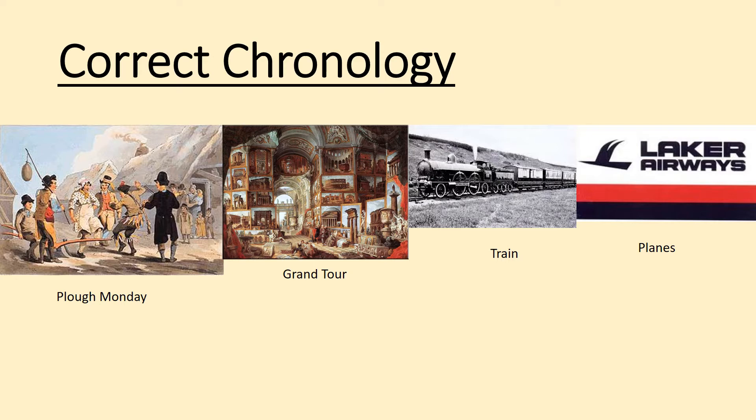Then we move on to the Grand Tour in the early modern era, which was for rich men to finish their education. And then in the modern era we go to trains and planes, which is something we don't really think about anymore — it's just something that happens. But they were revolutionary in their time. A train made getting to places in England so much quicker and massively expanded trade and towns because people wanted their houses and factories built near railway stations. And planes opened up pretty much the entire world to tourism and will forever impact the economies of all those countries.